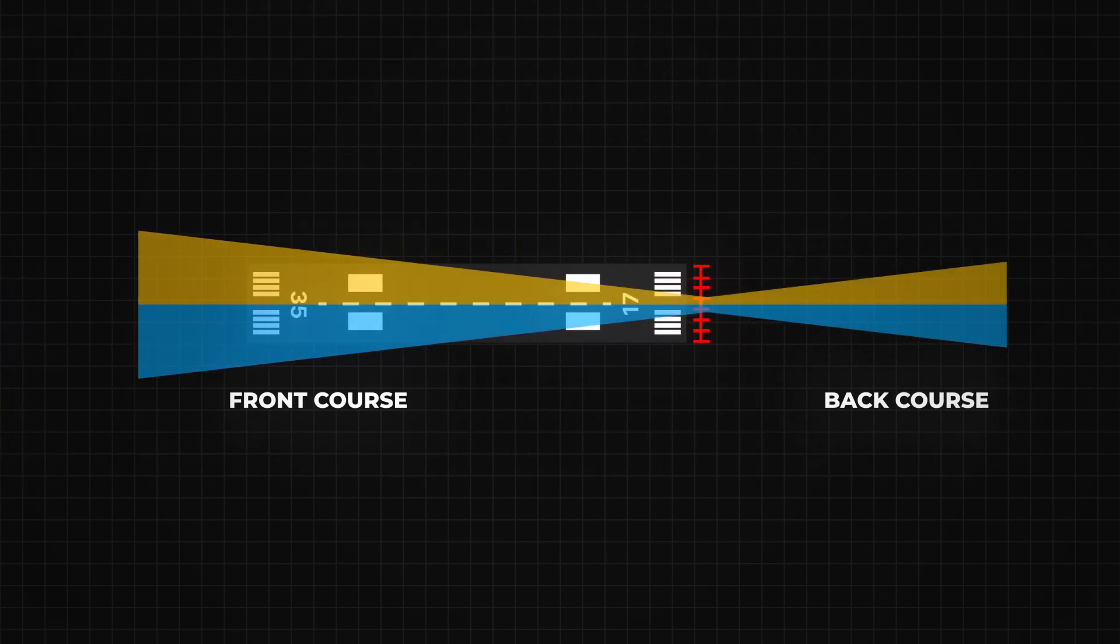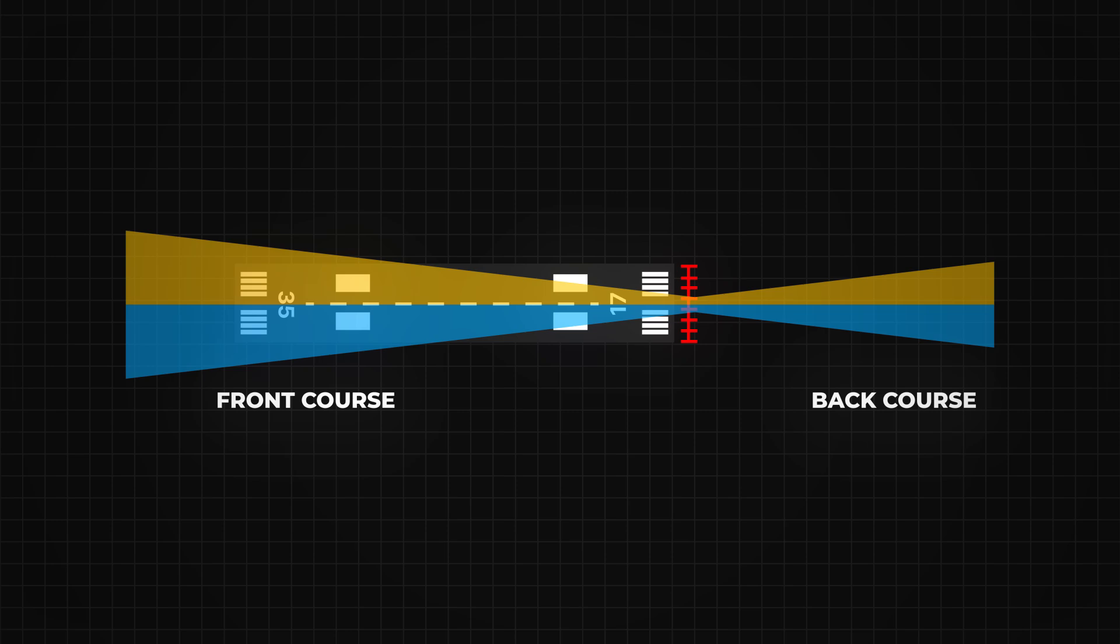Some airports even offer a back course for the localizer, allowing approaches from the opposite side, but without a glide slope.